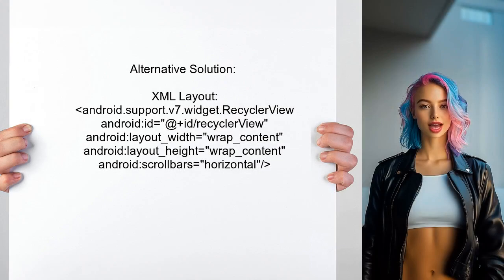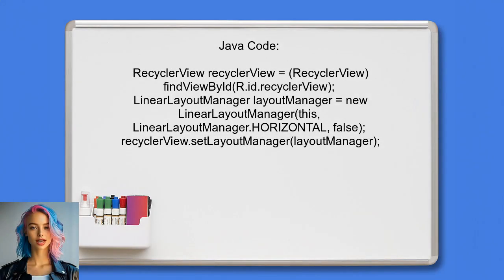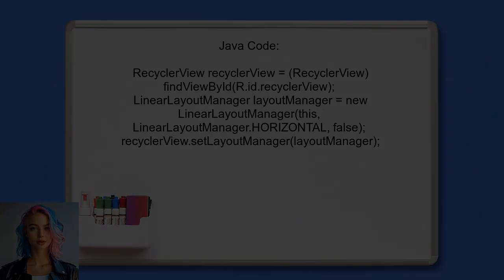Now let's look at an alternative solution provided by another user. They suggest starting with the XML layout — you need to define a recycler view with specific attributes for width, height, and horizontal scroll bars. In the Java code, you initialize the recycler view and set a LinearLayoutManager with horizontal orientation. This allows the recycler view to scroll from right to left.